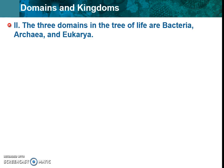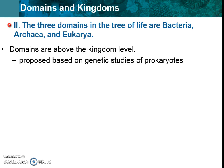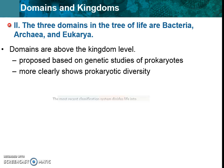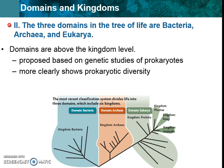We have those three major domains or big categories, and they are based on genetic studies. That's how we got rid of that Monera category. They show not only the diversity of life, but also the fact that prokaryotes are a diverse category too. Don't forget that there are two domains that are prokaryotes: bacteria and archaebacteria. You could jot that down — just remember that.